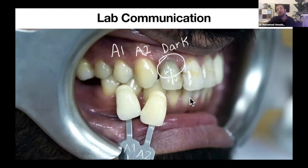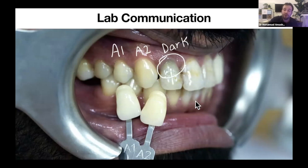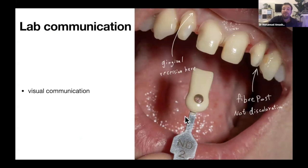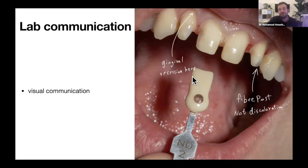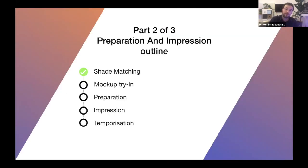For lab communication: for cases requiring a lot of communication, I visit my lab technician personally and discuss the case. Visual communication is key — tell your lab things like: 'this black area is a fiber post, don't try to conceal it' or 'there's a gingival recession, I know about it.' Tell them what you want from the case. Make their life easier — don't assume your lab knows what you want. That's everything about shade matching.